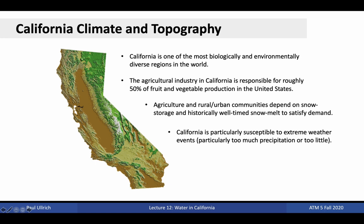Let's review some relevant facts about California. The state is one of the most biologically and environmentally diverse regions in the world. Its agricultural industry is essential to the whole nation, being responsible for approximately 50% of the nation's fruit and vegetable production, 80% of the world's almond production, and 35–40% of the world's walnut and pistachio production. Agriculture in California has been successful because of the Central Valley's alluvial soil and sunny growing season. However, because of the lack of precipitation in the summer season, agriculture is largely supported by steady snowmelt from the wintertime snowpack.